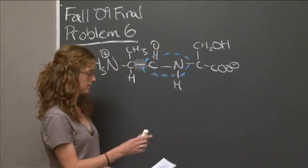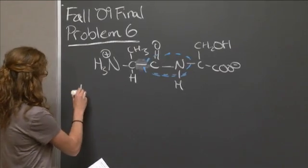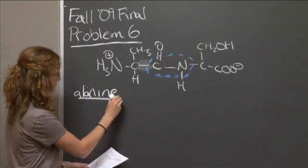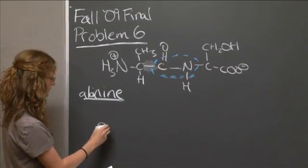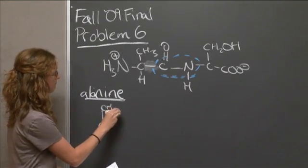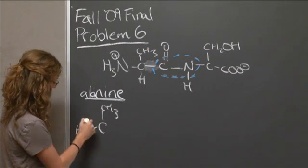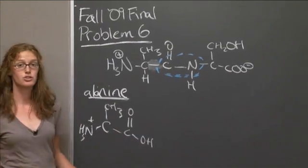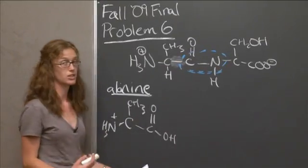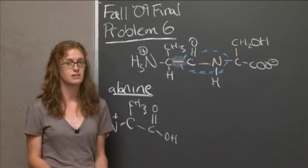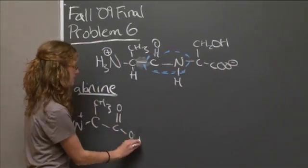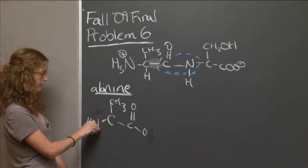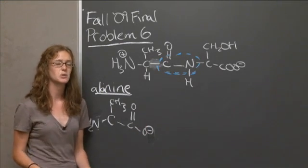So let's start with alanine first. We have this central carbon with the amine group and the carboxylic acid group. I just drew that totally protonated; however, we want to draw it totally deprotonated because it's in basic solution. So I'm just going to erase the extra hydrogens, and we have a deprotonated amine group and a deprotonated carboxy group. That is what it would look like in basic solution.